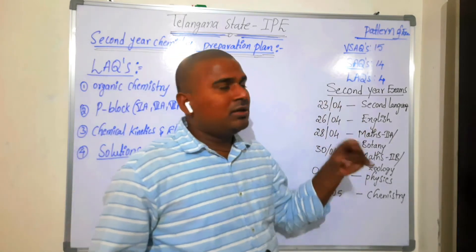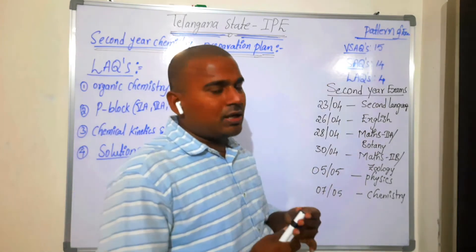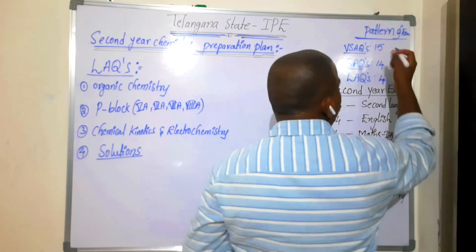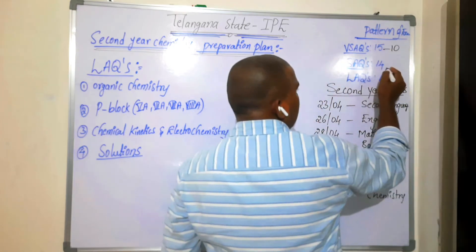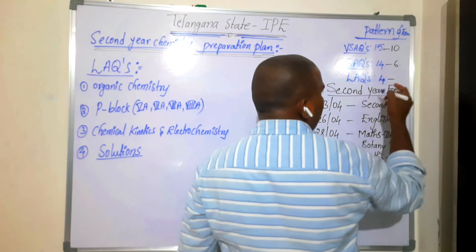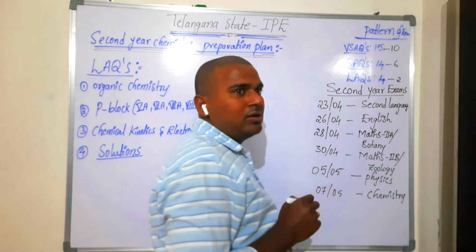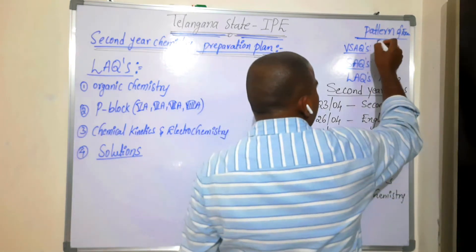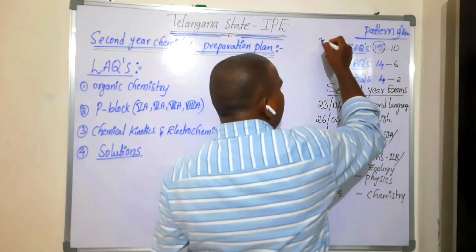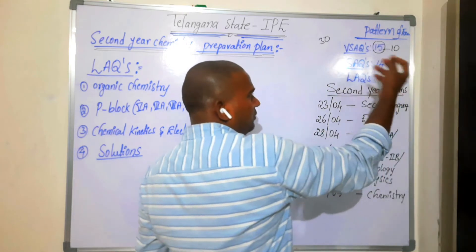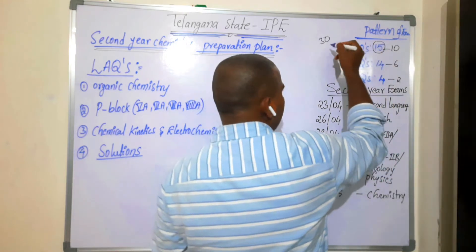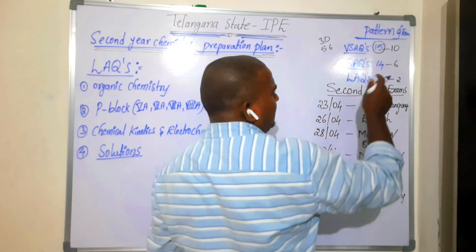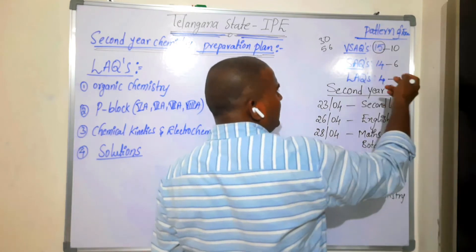I will cover the pattern of examination change. Last time we had 10 VSAQs, but now we have 15 VSAQs. We have SAQs 14, we answer 6; LAQs 4, we answer 2. The total exam paper is: 15 VSAQs for 30 marks, 14 SAQs at 4 marks each giving 56 marks, and 4 LAQs at 8 marks each giving 32 marks.